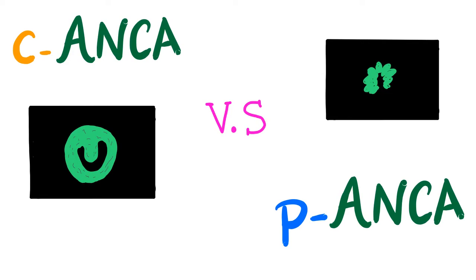Hey guys, it's Medicosis Perfectionalis again, continuing our rheumatology playlist. In the previous video, we talked about ANCA, the antineutrophilic cytoplasmic antibody. Today, we'll compare between C-ANCA and P-ANCA, the cytoplasmic ANCA versus the perinuclear ANCA. Let's get started.